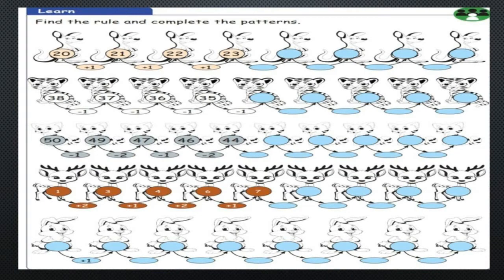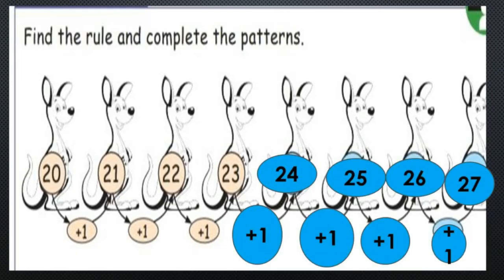Let us learn some more patterns. Here you have to find the rule and complete the patterns. First one: 20 plus 1 is 21, 21 plus 1 is 22, 22 plus 1 is 23. It is in increasing order, increases by 1. So continuing: 23 plus 1 is 24, 24 plus 1 is 25, 25 plus 1 is 26, and 26 plus 1 is 27.